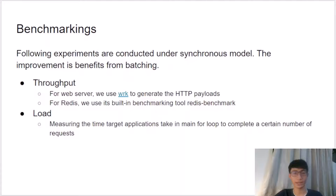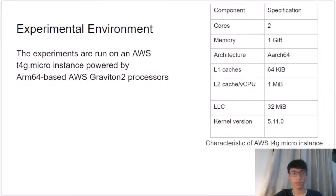Let me explain how we benchmark ISCA. The experiments are conducted under a synchronous I/O model, and the improvement is a benefit from batching. To measure throughput with different applications, we use different benchmarking tools. For web servers, we use WRK, the modern HTTP benchmarking tool, to generate HTTP payloads. For Redis, we use its built-in benchmarking tool. To measure latency, we record the time an application takes in the main loop to complete a certain number of requests. Experiments are conducted on an AWS T4G micro instance powered by ARM64-based AWS Graviton2 processors.